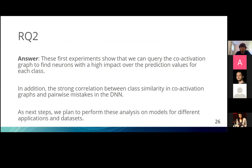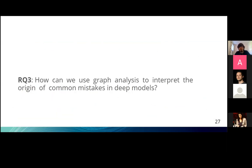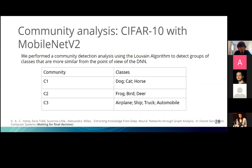These two analyses show that we can query the co-activation graph to find neurons with high impact over prediction values for each class, and find a strong correlation between class similarity in the co-activation graph and pairwise mistakes in the DNN. As a next step, we want to perform this on different models, applications, and datasets. Research question three asks: how can we use graph analysis to interpret the origin of mistakes in deep models?